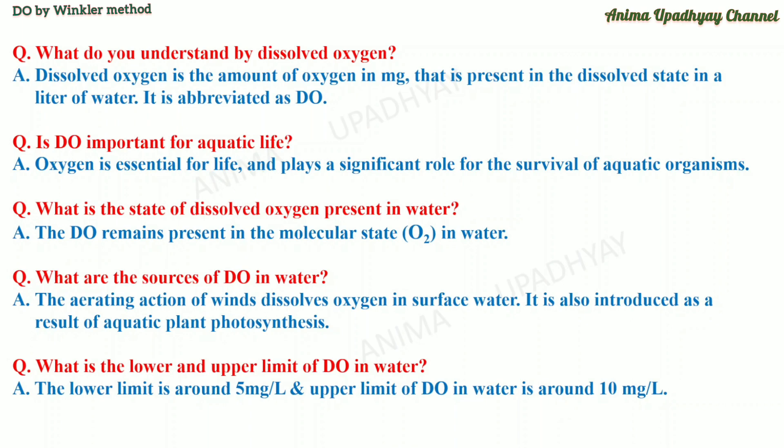Is D-O important for aquatic life? Yes, oxygen is an essential element of life and it plays a significant role for the survival of aquatic organisms. What is the state of dissolved oxygen present in water? The oxygen which is present in the dissolved state in water is in the molecular state, that is the O₂ state.